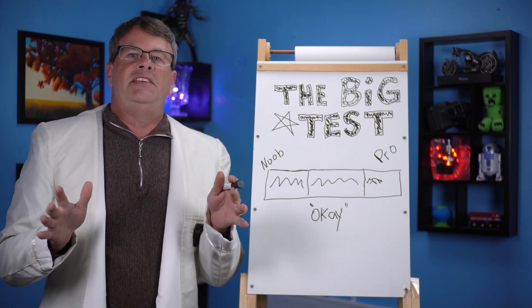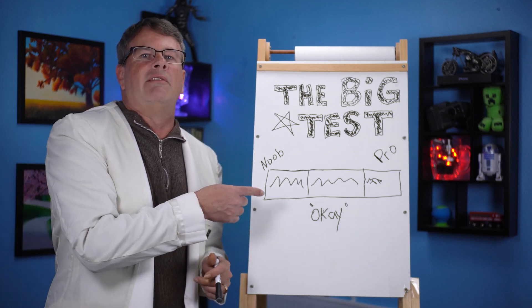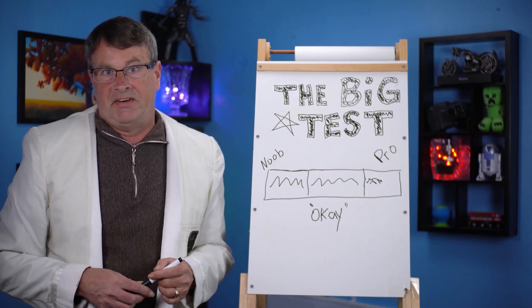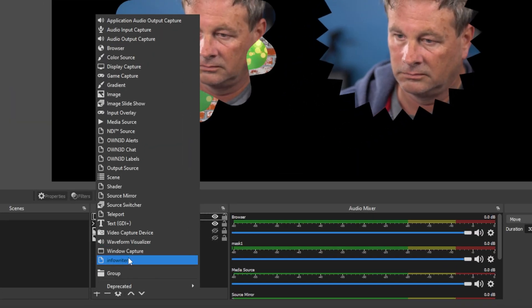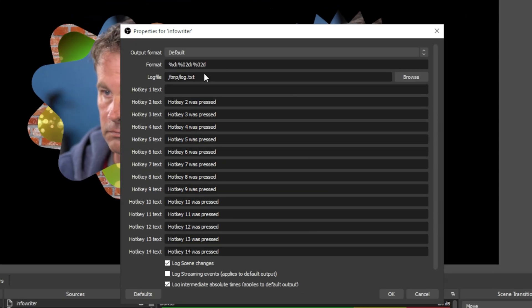We want to make things as easy as possible. I mean, we're pro level streamers, not editors here. The free plugin InfoWriter is going to enable you to set hotkeys that are going to create a text file.